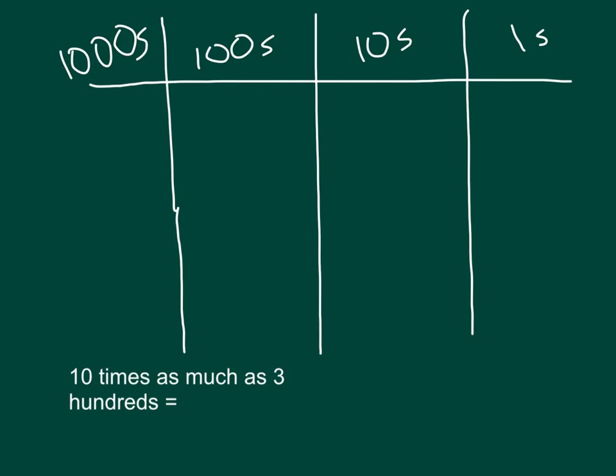Do we start with modeling the 10 or the 3? Right, it's the 3. But what is the 3 worth? It's worth 3 hundreds. So where do we put our disks? Right, in the hundreds place. Now, what happens when we multiply by 10?